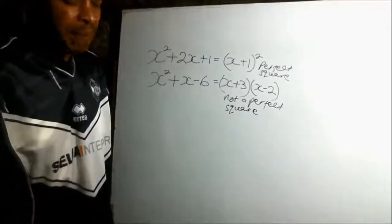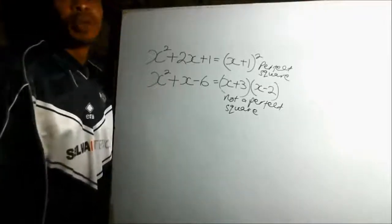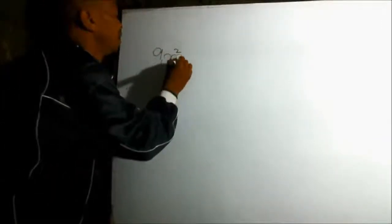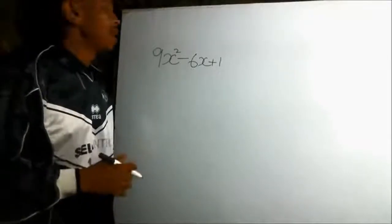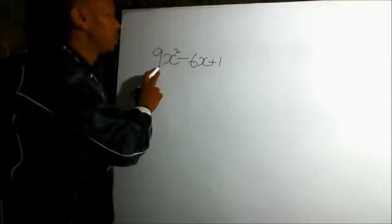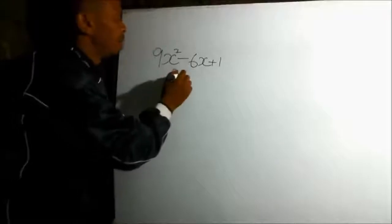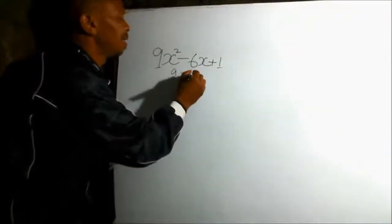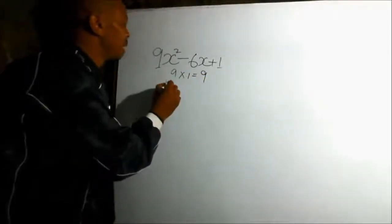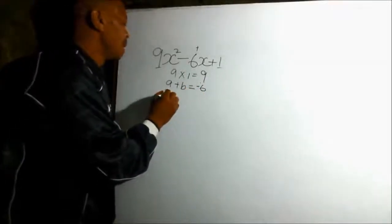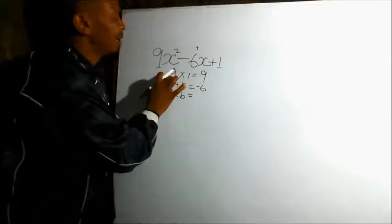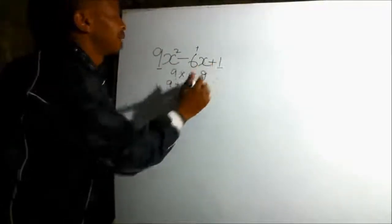Let's do another two examples where the coefficient of x squared is not equal to 1. Another quadratic expression is 9x squared minus 6x plus 1. When the coefficient of x squared is not equal to 1, what we do is multiply the coefficient of x squared by the constant — that is 9 times 1 — to get the product 9. Then we get two numbers: A plus B should give us minus 6, and A multiplied by B should give us 9.